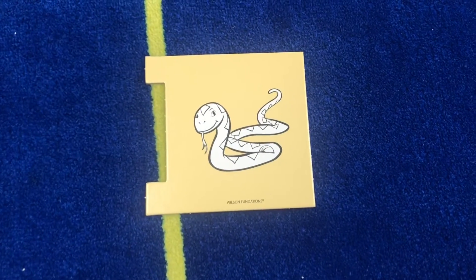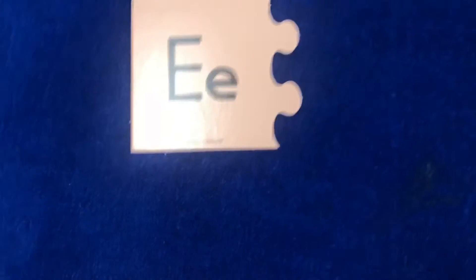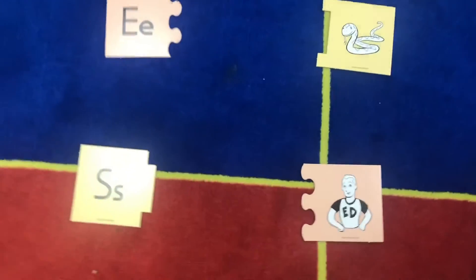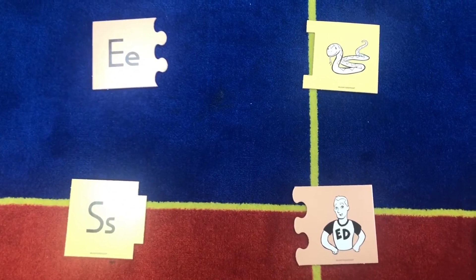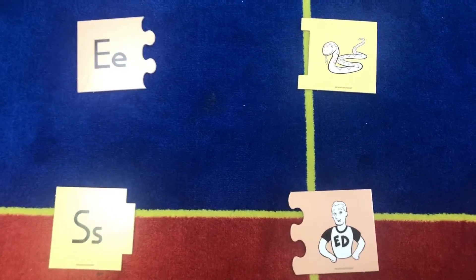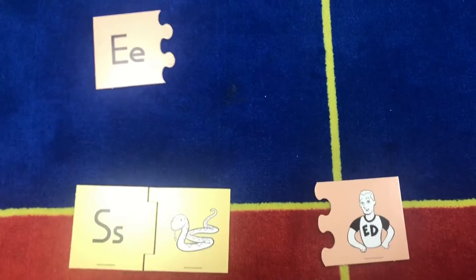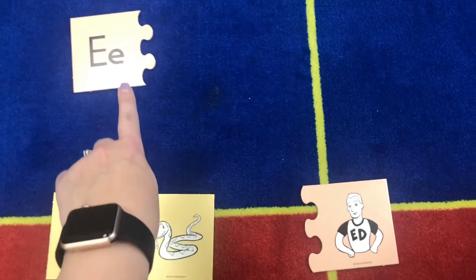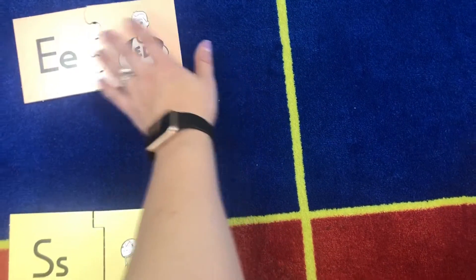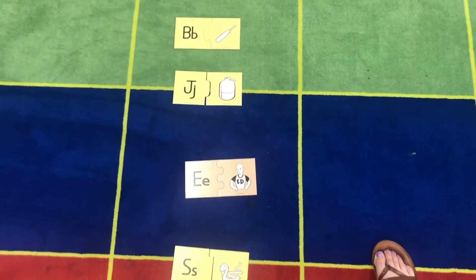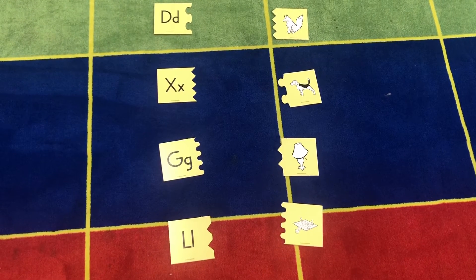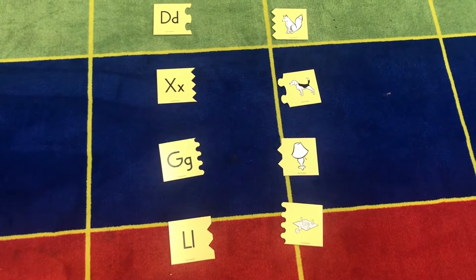So we've got a snake. What does snake start with? An E or an S? If you said S, that's correct. Snake starts with S. And then we have E, Ed, E. Ed starts with E. That is Ed. Okay, now I'm going to give you a chance to match the pictures with the letters.